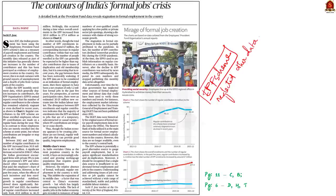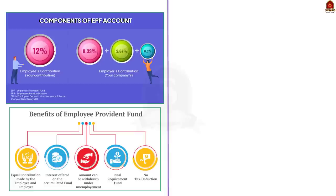The EPF scheme is a retirement benefit scheme for employees, administered by the Employees' Provident Fund Organisation (EPFO). Employees and employers each contribute 12% of the employee's basic salary and dearness allowance to the EPF scheme. This contribution can be withdrawn at the time of retirement, death, or other eligible events. Apart from this, the EPF scheme offers benefits including a tax break, a guaranteed return on investment, and protection against inflation.